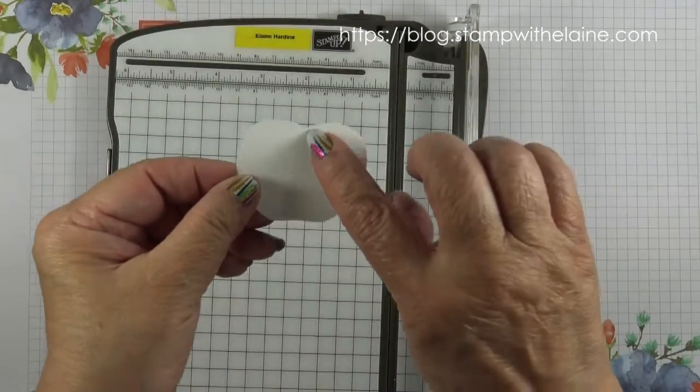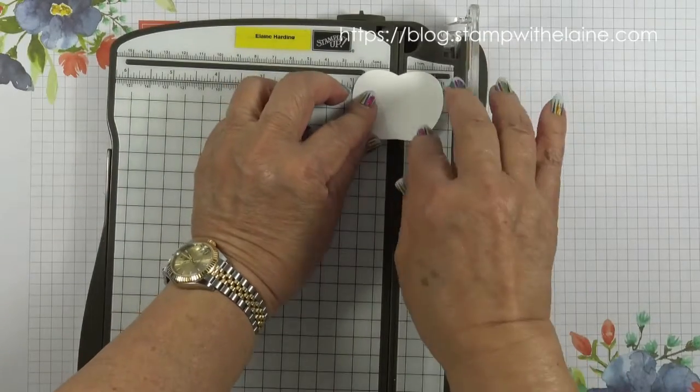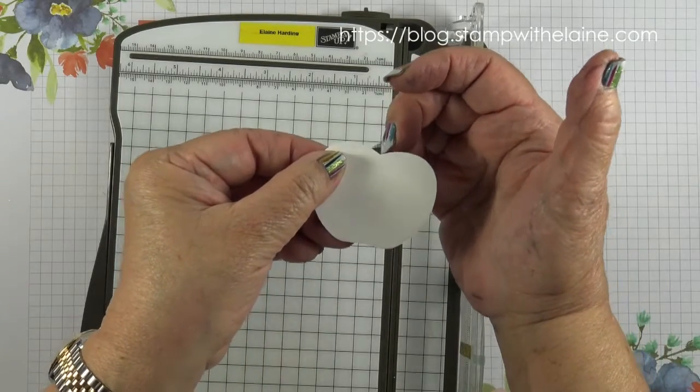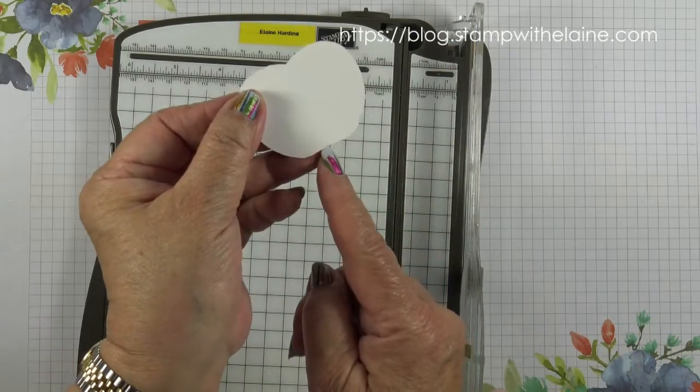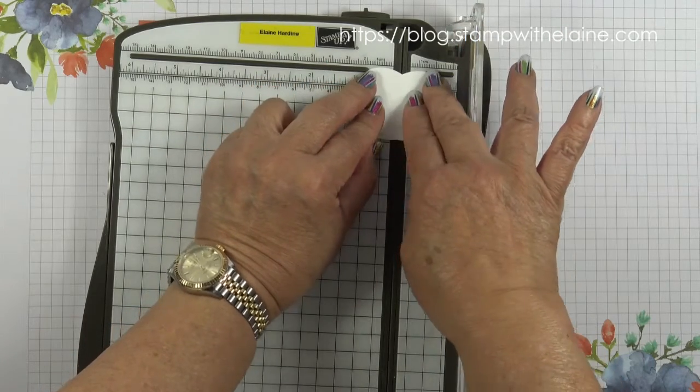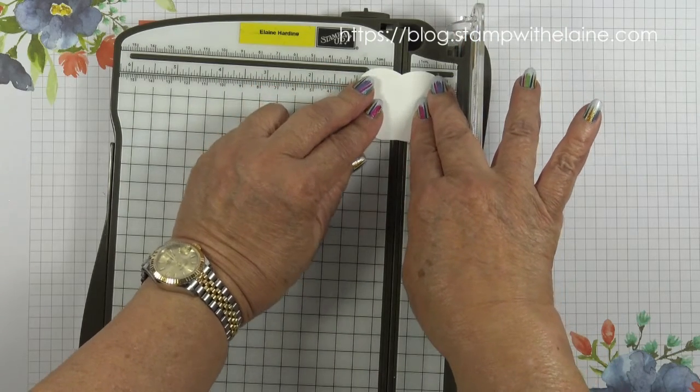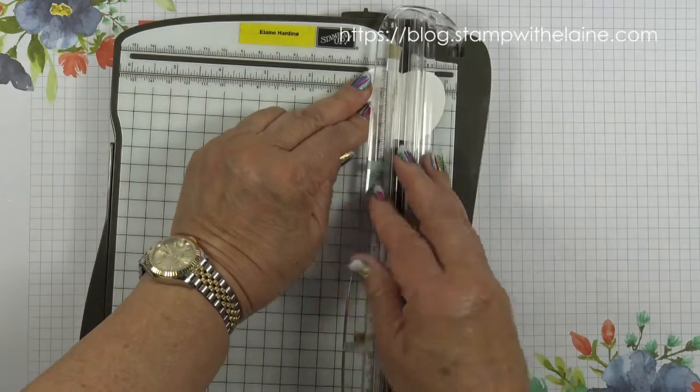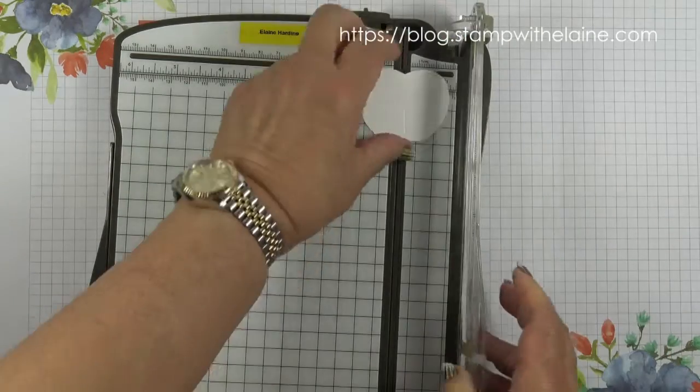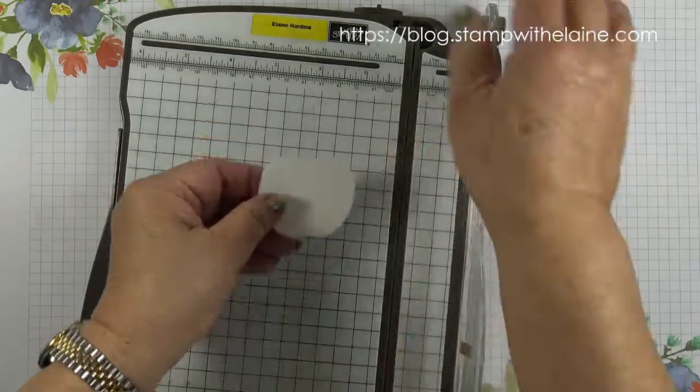With the apples that you've punched out you need to score it down the middle. So line up the dip in the apple with the dip at the bottom. Make sure it's straight and then just score. So you do that for all five apples.